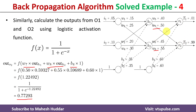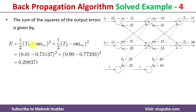Now that we have output at o1 and o2, and the target values are already given, we calculate the error. The error equation is: E = (1/2)·(t1 − out_o1)² + (1/2)·(t2 − out_o2)². Substituting all known values of t1, t2, out_o1, and out_o2, we get E = 0.298371. This is the total error at the output layer.